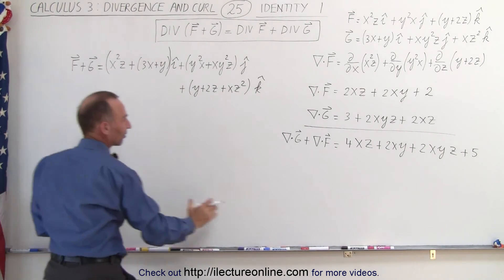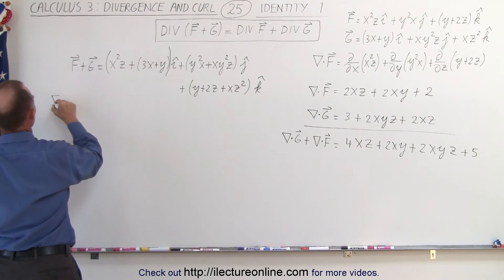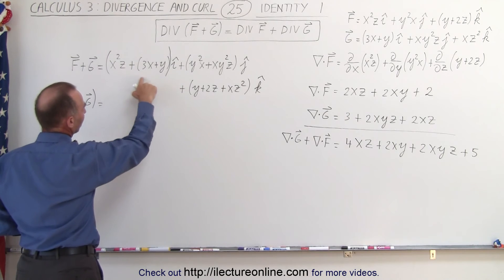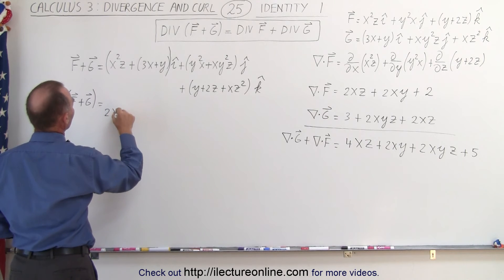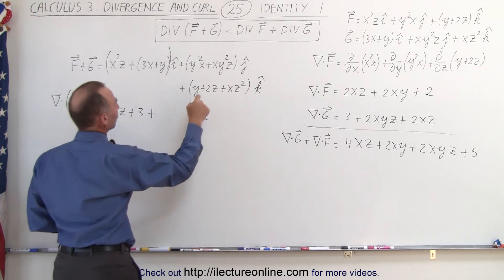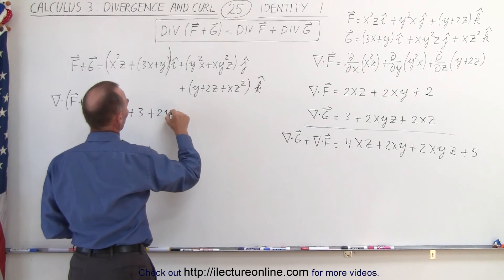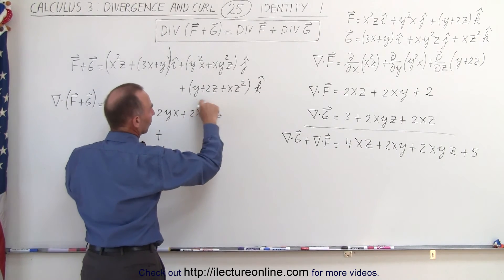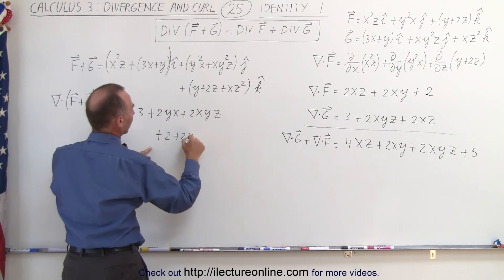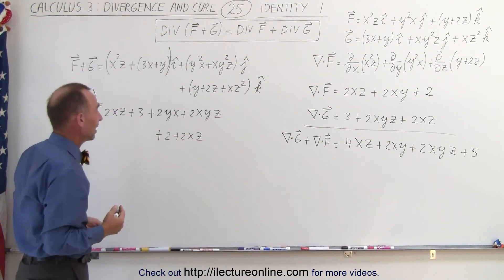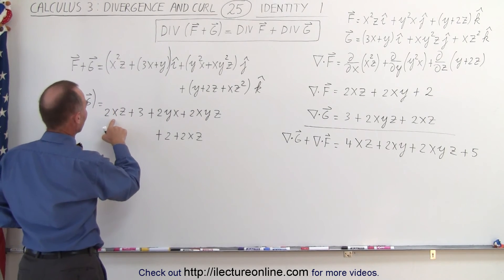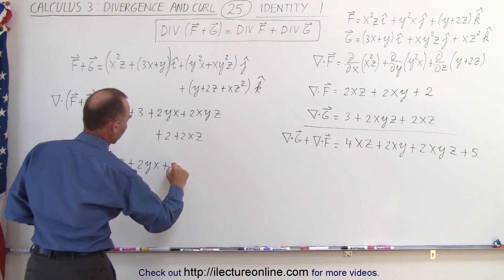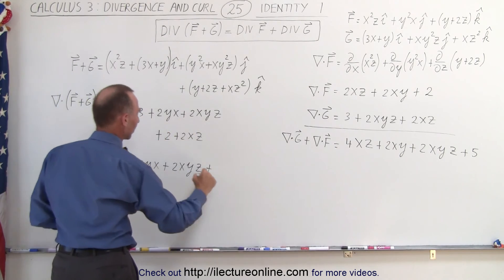Now we're going to take the divergence of that, and we should get the same result as before. So we take the divergence of f plus g: we take the partial derivative of the i component with respect to x, which gives us 2xz + 3, plus the partial derivative of the j component with respect to y, which will be 2yx + 2xyz. Then we take the partial derivative of the k component with respect to z, which gives us 2 + 2xz. Adding common terms: we have 2xz and 2xz giving 4xz, plus 2yx, plus 2xyz, and 2 and 3 together give us plus 5.